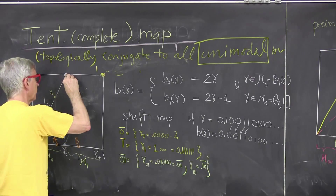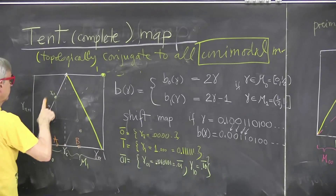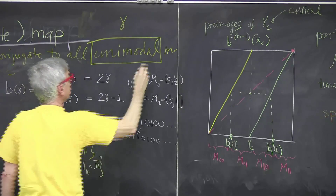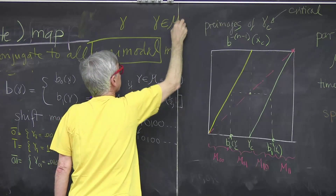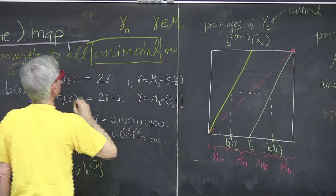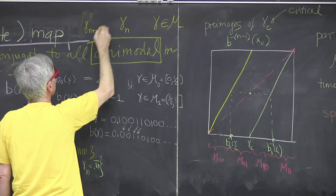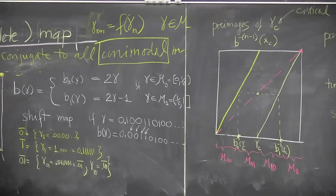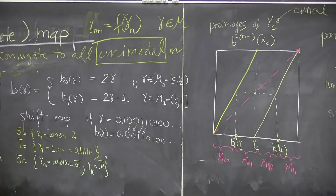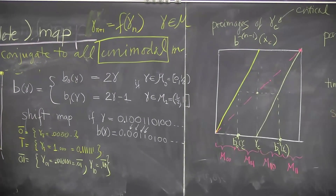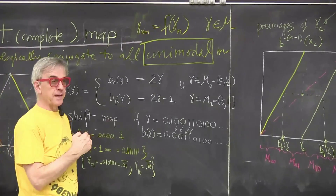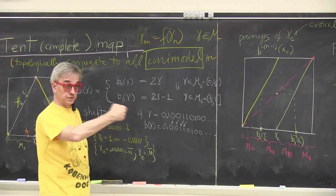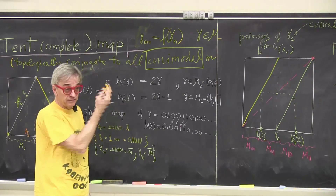In that map, the right branch looks like this, and now we have a left branch. If your starting point is in state space — which in this case is just a unit interval — at time n, you have a law of motion that gives gamma n plus 1. This is a sketch of this map for unimodal, and this is a sketch for Bernoulli.